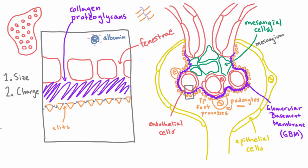The kidney does this at all three layers. The endothelial cells have negative charges because of little glycoproteins that they express. The GBM has a very strong negative charge because of the proteoglycans — the sugar chains have a lot of negative charges on them, making the GBM negatively charged. And the foot processes are negatively charged as well.